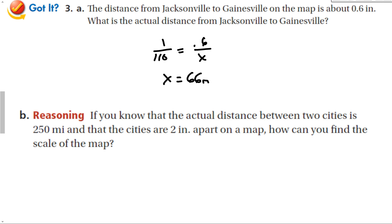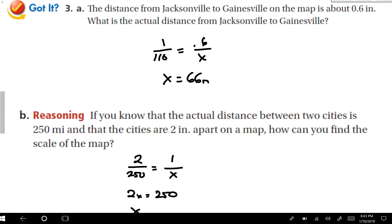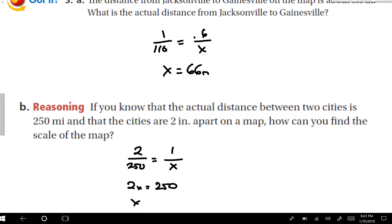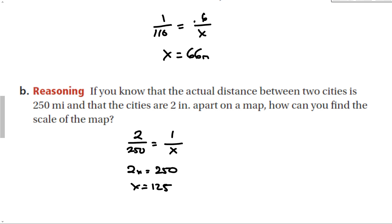If you know that the actual distance between two cities is 250, and the cities are 2 inches apart, how can you find the scale on the map? Well, we can set up my ratio, 2 to 250. But now you might not know either one here, but doesn't it make sense to figure out how far one inch is? That would be a good scale, usually comparing one something to something else. So now here we get 2X equals 250, which means that X equals 125. So my scale would be one inch to 125 miles.